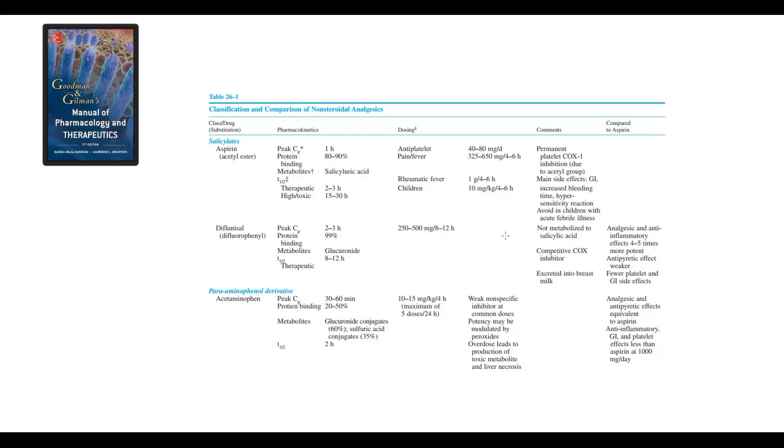NSAIDs can be divided into classes. Non-selective NSAIDs include salicylates as aspirin and para-aminophenol derivatives as acetaminophen. We usually compare the effect of other NSAIDs to aspirin. For example, acetaminophen has the same potency in terms of analgesic effect and lowering body temperature, but it has less potent anti-inflammatory effect.